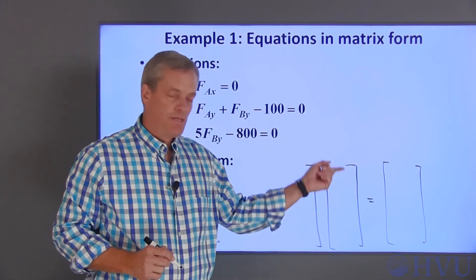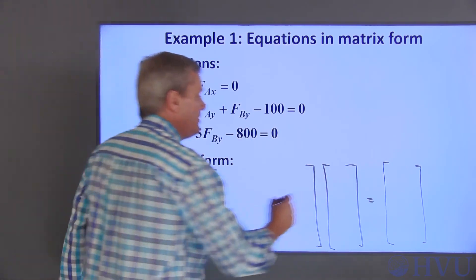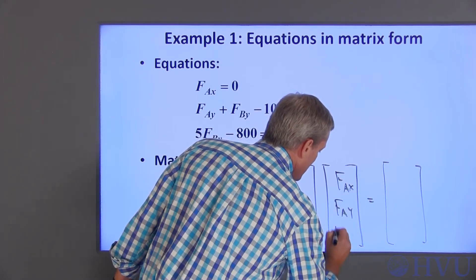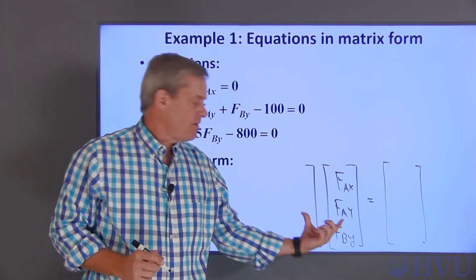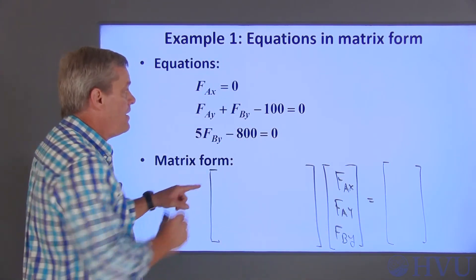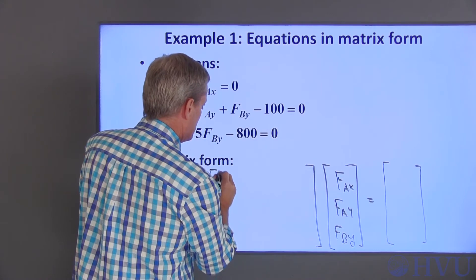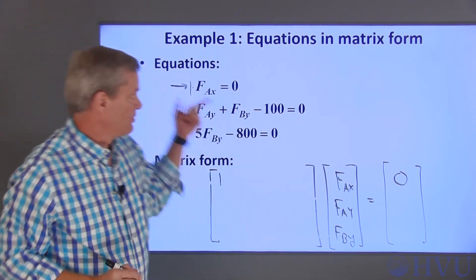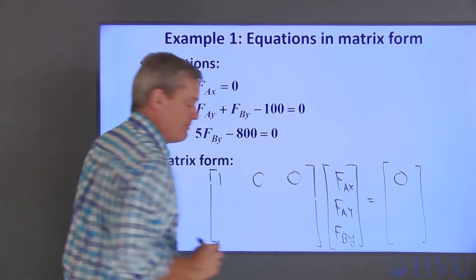The first thing I need to do is decide what order I want my variables to be in the X vector. I'm going to choose them to be in the order FAX, FAY, and FBY. This order doesn't really matter, but I need to decide what it is so that I know how to load the A and the B matrices. The first equation here is one times FAX is equal to zero. FAY and FBY don't show up in this equation. I can get rid of them by multiplying them by zero. So this is one times FAX plus zero times FAY plus zero times FBY is equal to zero.